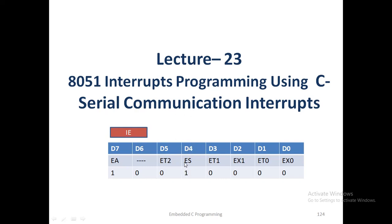You should make the ES pin as 1 and the EA bit as 1. Then only the interrupt is going to be generated. So the binary value is 1001 0000, which converts to hexadecimal 0x90. So 0x90 is loaded into IE. Now the 8051 microcontroller is going to accept the serial communication interrupt.